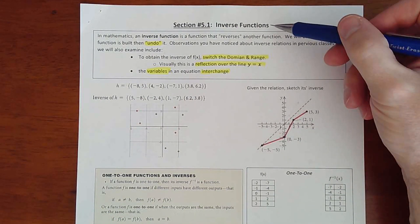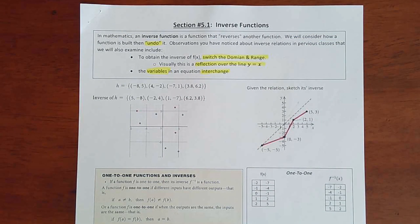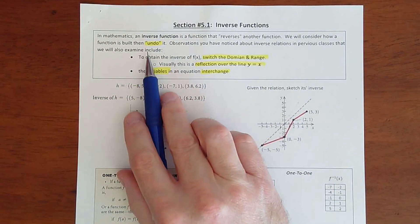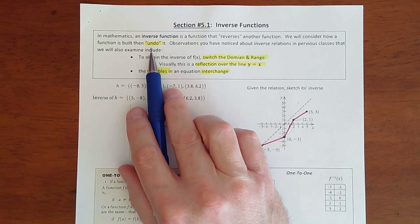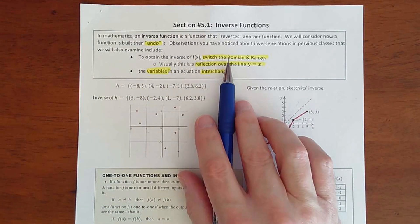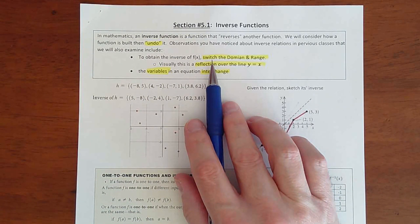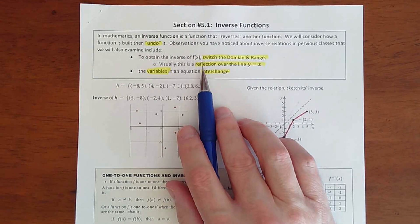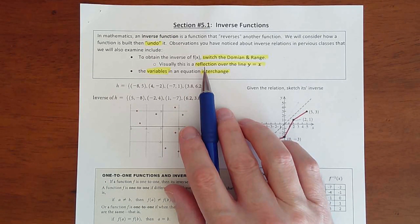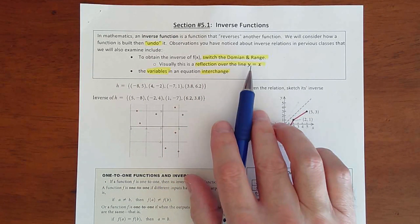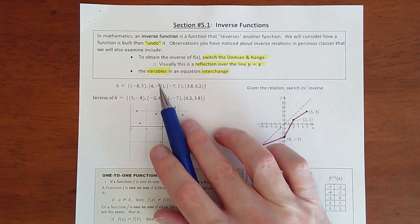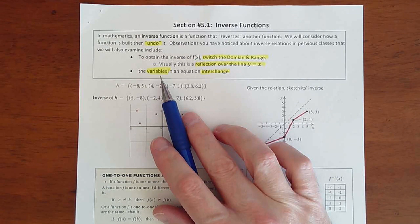In this lesson we're going to introduce inverse functions. The idea of an inverse function is that it's supposed to reverse another function - it's going to undo it. The main thing is, in order to figure out what an inverse is, we're going to switch the domain and range. When we do that, there's something going on with the visual - it's going to be reflected over this line of y equals x, which we're going to show here in a second. The biggest thing is, if you want to figure out what an inverse is, you just switch the x and y.